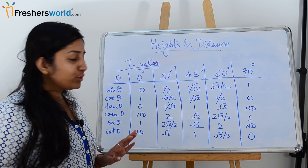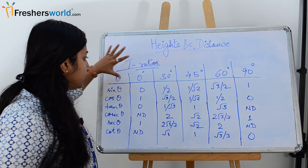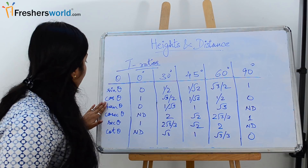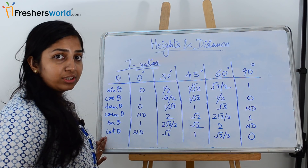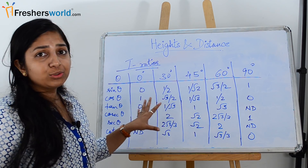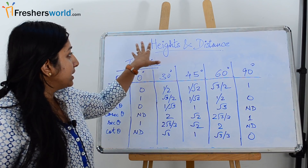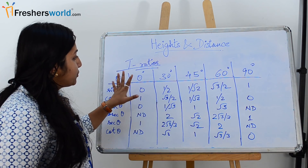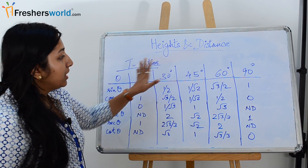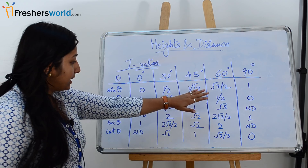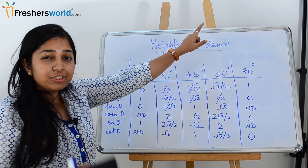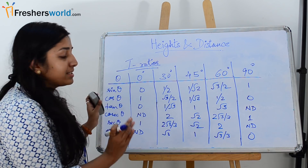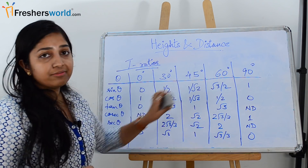The trigonometric ratios are shown in this table, which has all the T-ratio values from 0 degrees to 90 degrees for sin θ, cos θ, tan θ, cosec θ, sec θ, and cot θ. These are the values you would be using everywhere in problems related to height and distance. If you still have trouble understanding how these values came about, I'll put a card here redirecting you to our trigonometry video on the channel.